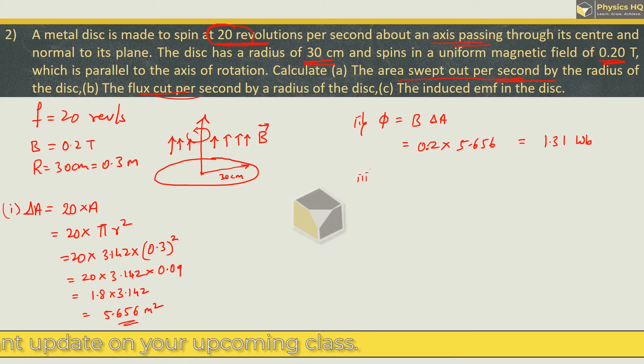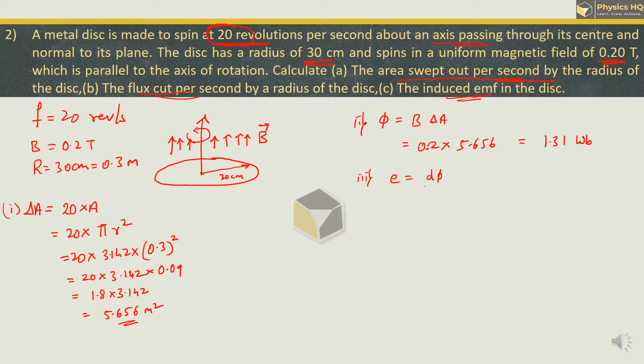And lastly they have asked what is the induced EMF. Induced EMF is given by the formula as d phi by dt or you can write it by flux upon time. So flux we got as 1.31 and the time taken for this flux was 1 second. So the EMF induced is 1.31 volt. Hope you all understood this.